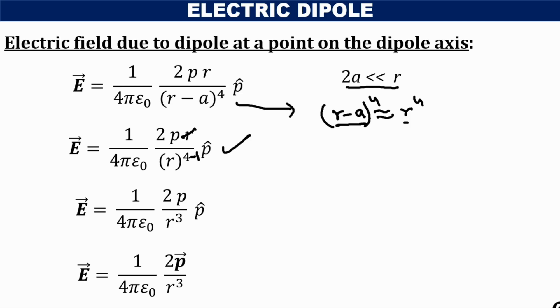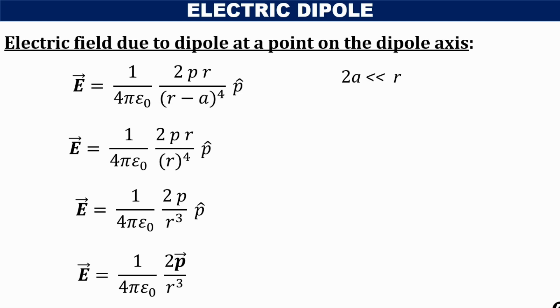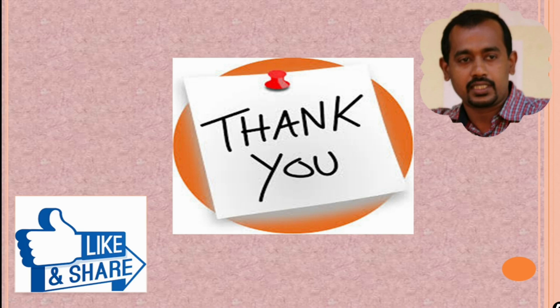I hope you have understood the concept of determining the electric field at a point on the axis of the electric dipole. The process is very simple — we find the electric field due to each charge and apply the principle of superposition. Thank you for watching the video, stay safe, keep learning.